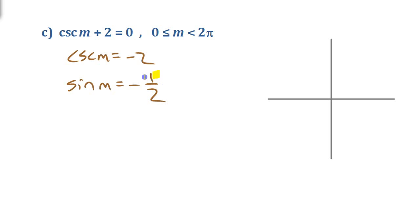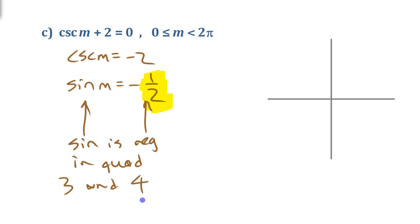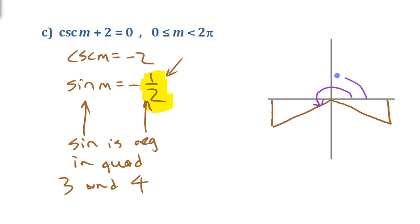Now, 1 over 2 is one of those special ratios from the special triangles. Since we're looking at where sine is negative, that's quadrants 3 and 4. Drawing the reference triangles in both those quadrants, with the sine value of 1 over 2 meaning the opposite side is 1 and the hypotenuse is 2, the reference angle for angle M is pi over 6.